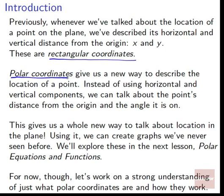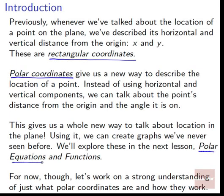Now we're going to look at a totally new way to talk about coordinates — polar coordinates. This gives us a new way to describe the location of a point. Instead of using horizontal and vertical components, we can talk about the point's distance from the origin and the angle that it's on. Using it, we can create graphs the likes we've never seen before. We'll explore these in the next lesson, Polar Equations and Functions. For now, let's work on a strong understanding of just what polar coordinates are and how they work.